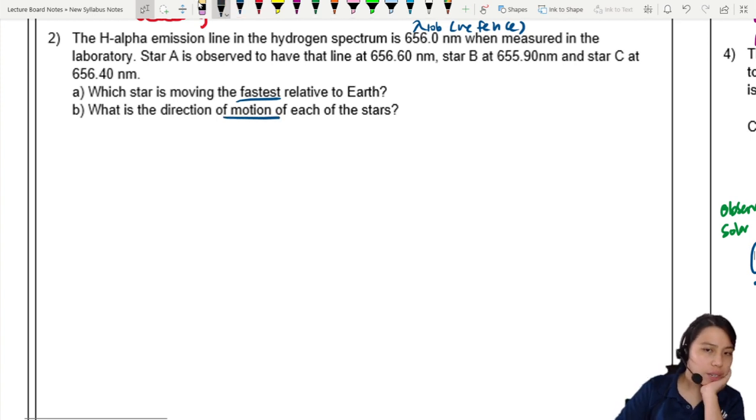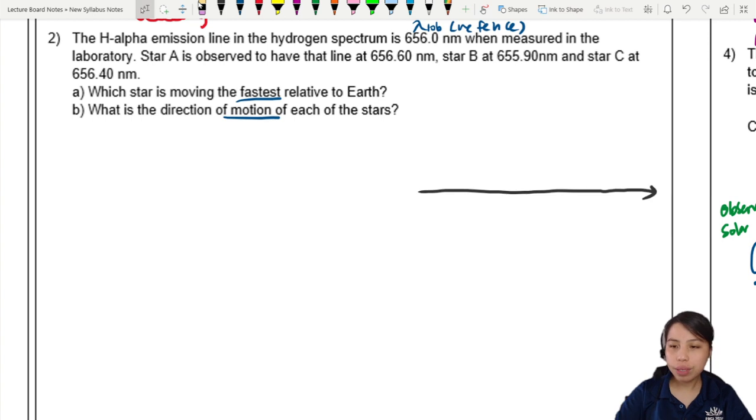So for these stars, I am going to draw a graph so we can see the shift. Let's put in the graph of wavelength. The reference is 656 nanometers. So that's going to be right, let's put it here in the middle. This is the expected lab frequency, 656.